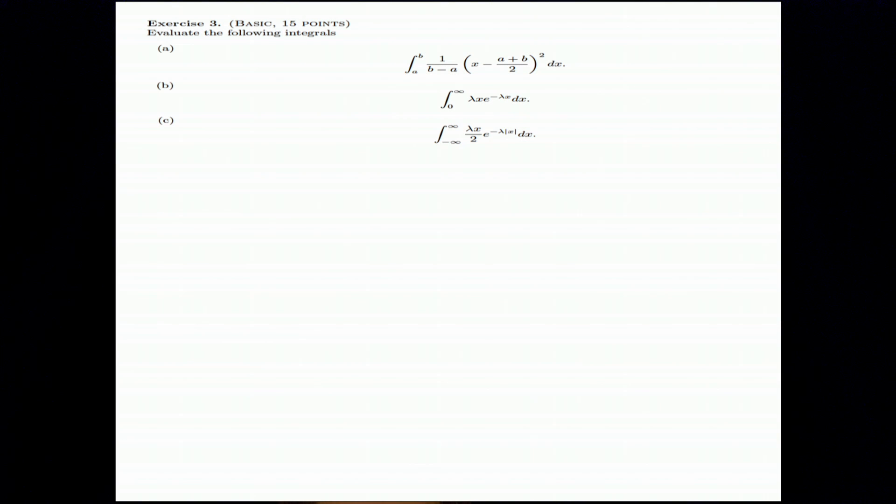Now, we review some calculus. First, part A. The integration from A to B, 1 over B minus A, then X minus A plus B divided by 2 squared DX.